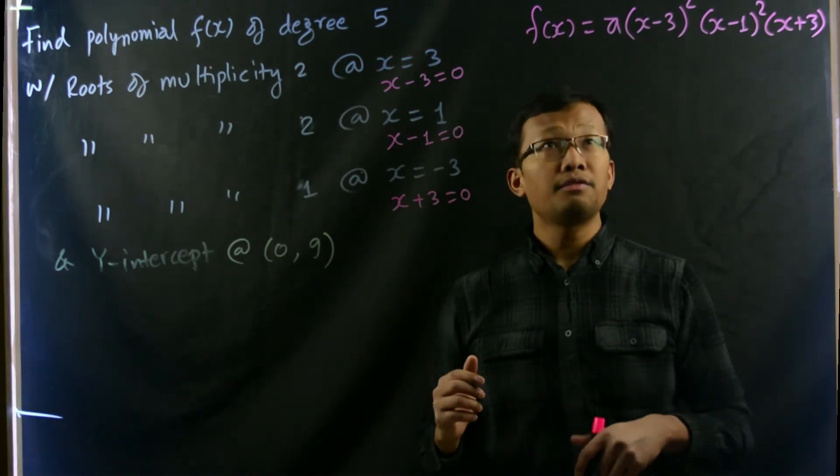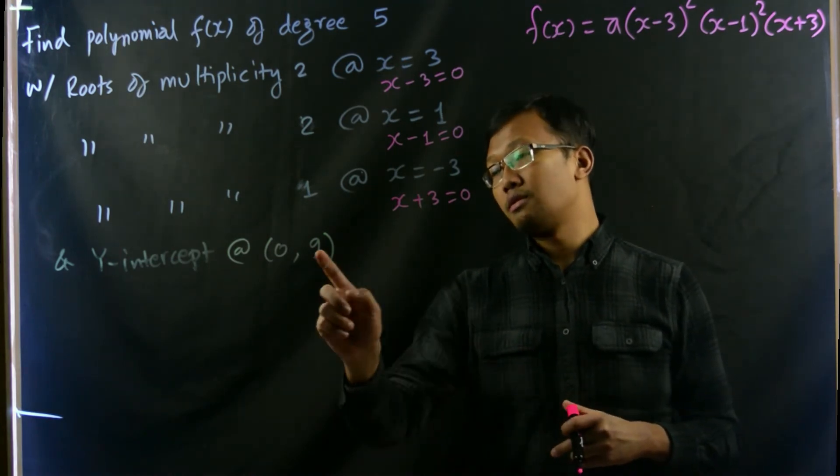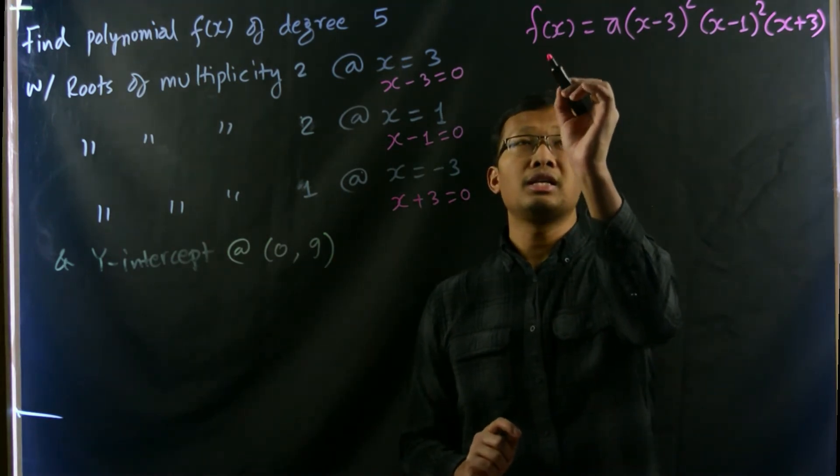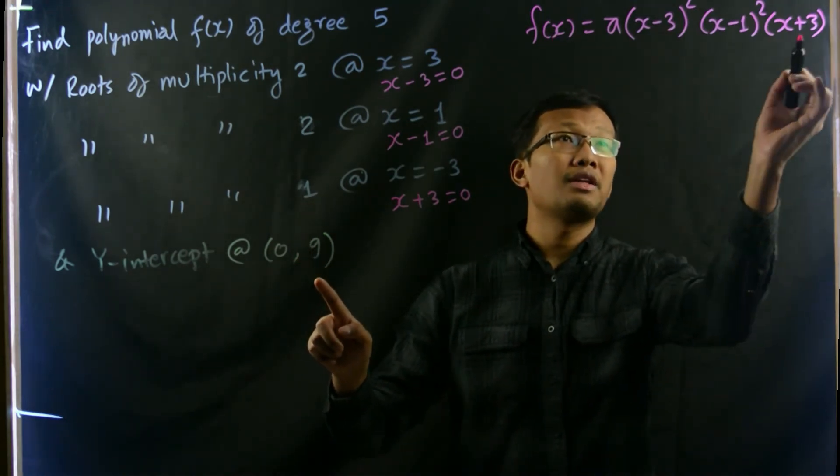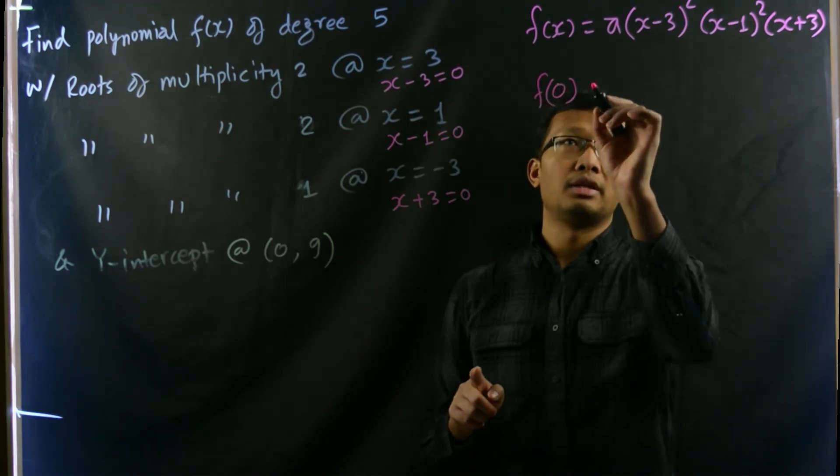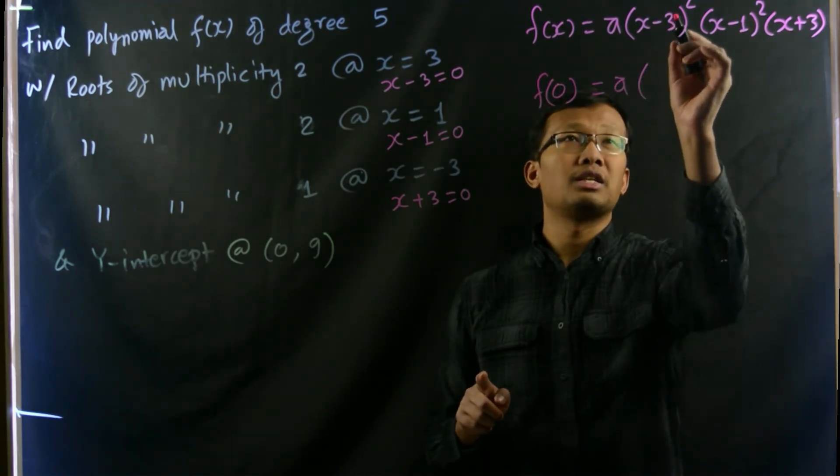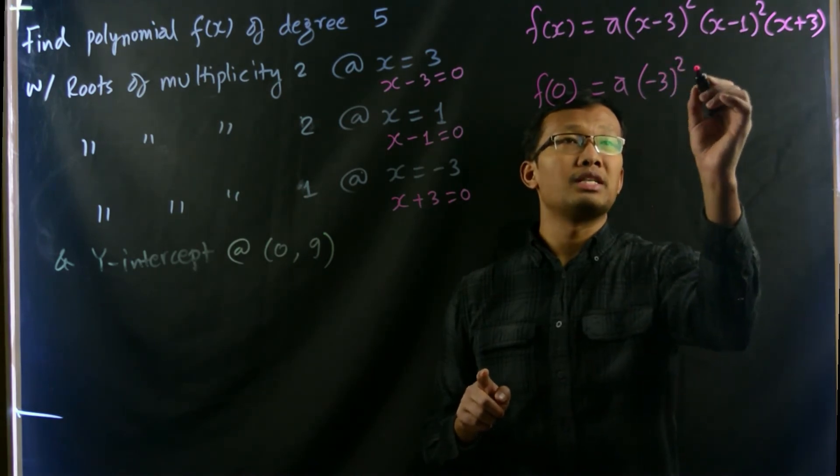Now if this polynomial function passes through this point (0,9), certainly if we plug in 0 for all of the x, then we will be finding in this way: f(0) equals a times (0 minus 3) whole square, which is (-3) squared, times (0 minus 1) which is (-1) squared.